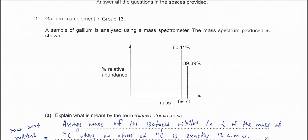Gallium is an element in group 13. A sample of gallium is analyzed using a mass spectrometer and this is the mass spectrum. Just two signals are given, which is for the 69 and 71 with its relative abundance.